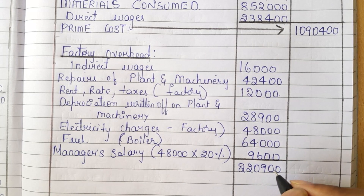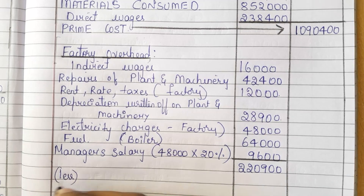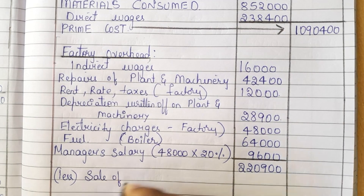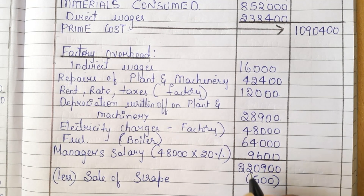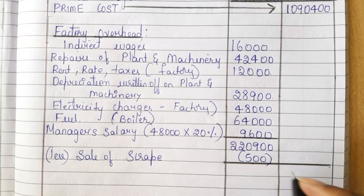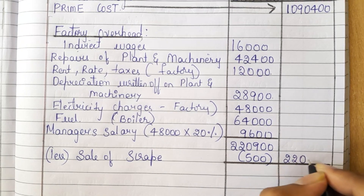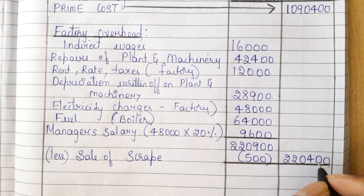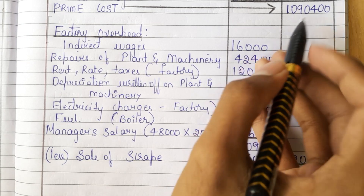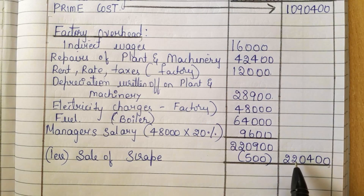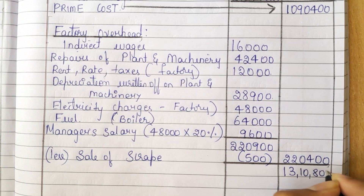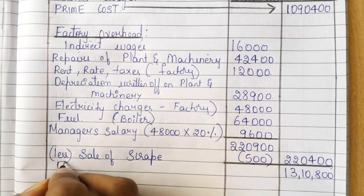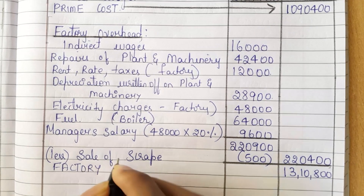They have given that sale of scrap, so that we need to deduct from the factory overheads. Sale of scrap is 500. We subtract 500, and then we add the total factory overheads of 2,20,400 to the prime cost of 10,90,400. We will get 13,10,800. This 13,10,800 is known as factory cost.